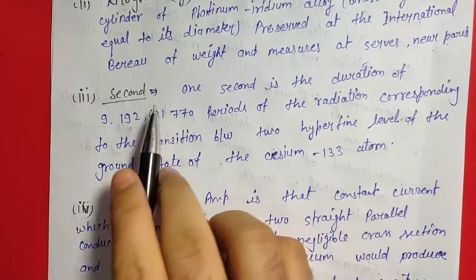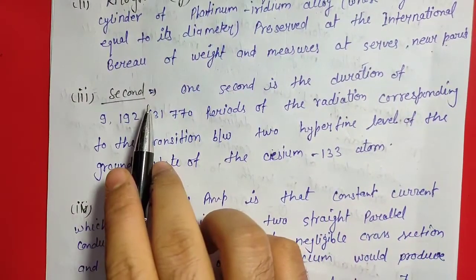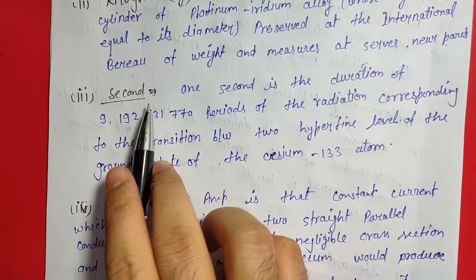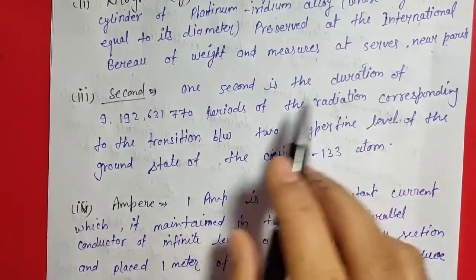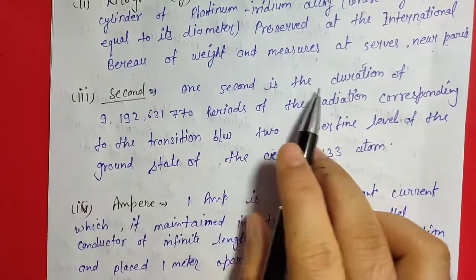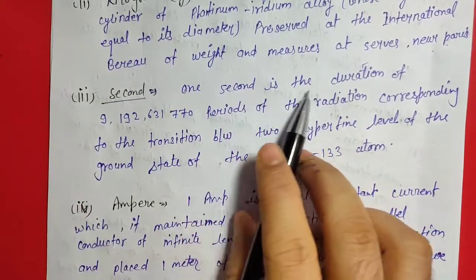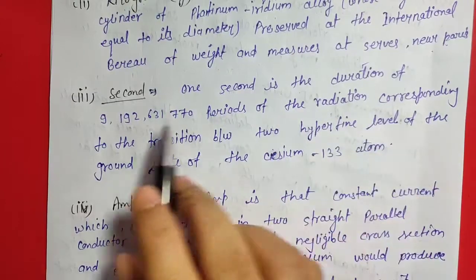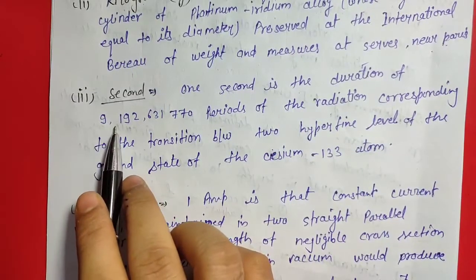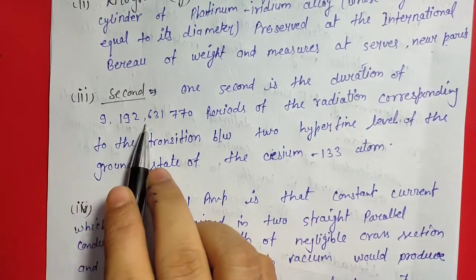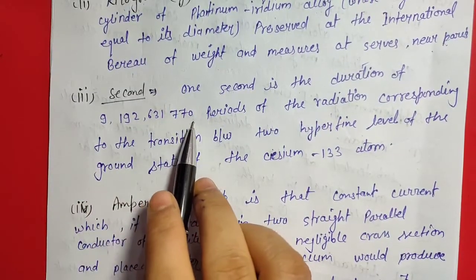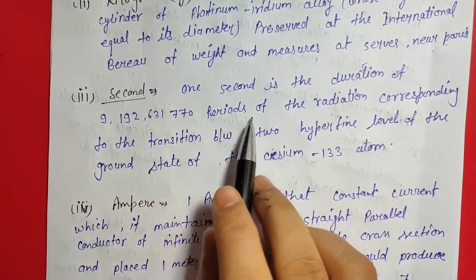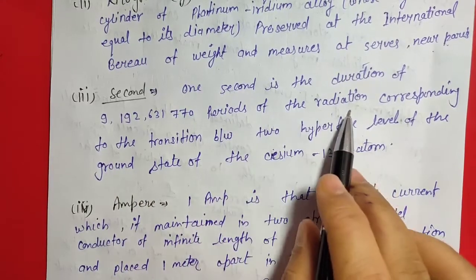Now the definition of second. Second is a unit of time. One second is the duration of 9,192,631,770 periods of radiation.